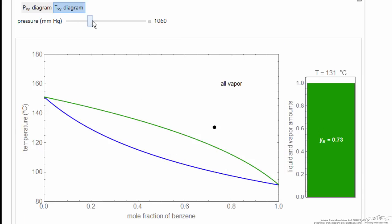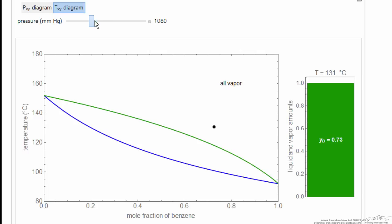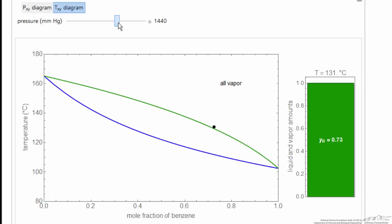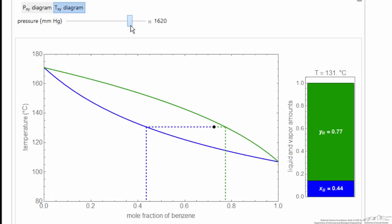And then I can increase the pressure, because this is at constant pressure. If I increase the pressure, then the curves move up because that higher pressure requires a higher saturation temperature. Again, the y-intercepts correspond to the saturation temperature for pure components.